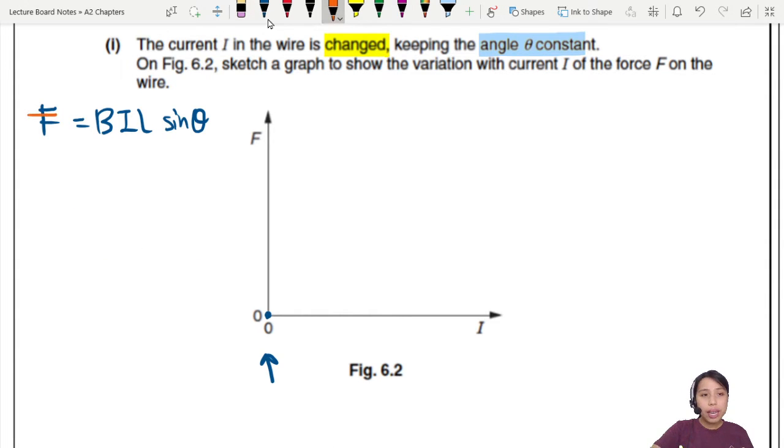When you look at the equation, if you can come up with a proportionality relationship, you can know how to draw the line. What is the relationship between F and I? Is B constant? Yes, they told us B is constant. Is L constant? Yeah, you're not gonna change the length of the wire. Is θ constant? Yes, they just said it. So all these are constants, which means F is proportional to I.